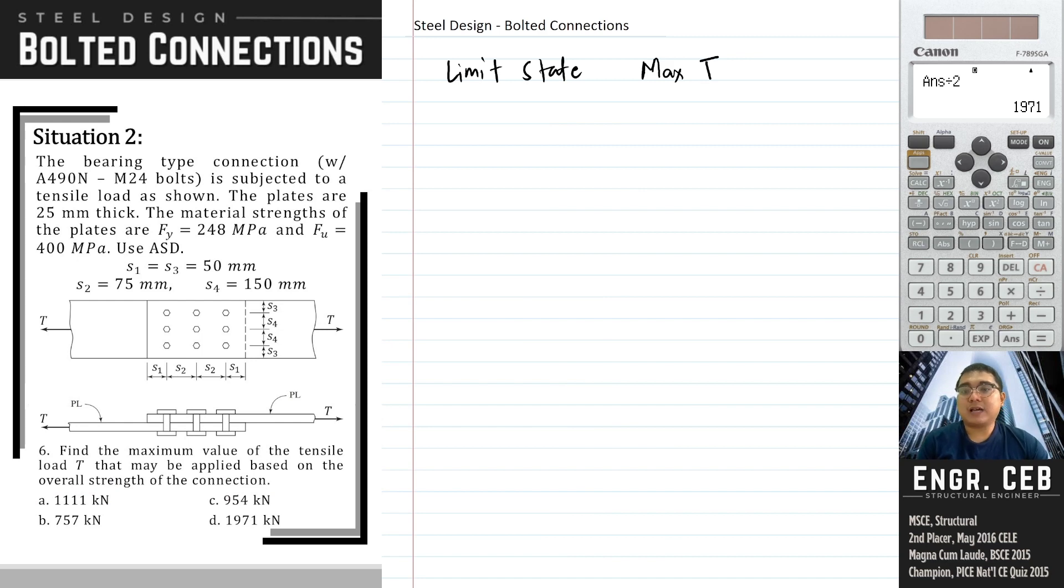Problem 6: Find the maximum value of the tensile load T that may be applied based on the overall strength of the connection. When we say overall strength of the connection, we will consider all the limit states that we have computed. First is the tensile yielding.